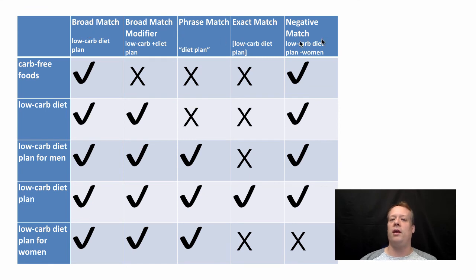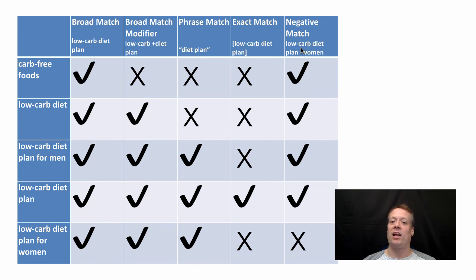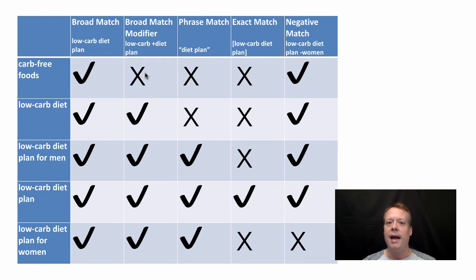Here I have five types of matches across the top: a broad match — 'low-carb diet plan'; a broad match modifier — 'low-carb +diet plan'; a phrase match — quotes around 'diet plan'; an exact match — 'low-carb diet plan' in brackets; and a negative match — 'low-carb diet plan' minus 'women'. So 'carb-free foods' will match only against broad match and the negative match. It won't match phrase match because 'diet plan' is nowhere in it, and it won't match the broad match modifier because 'diet' has to be in the search.